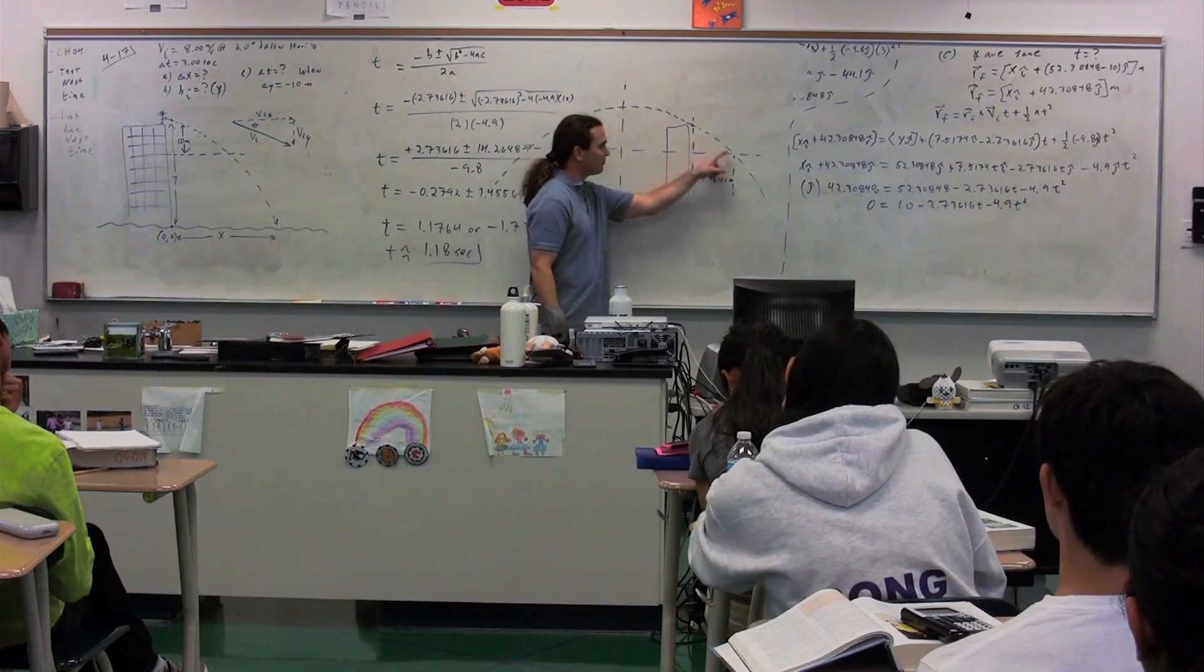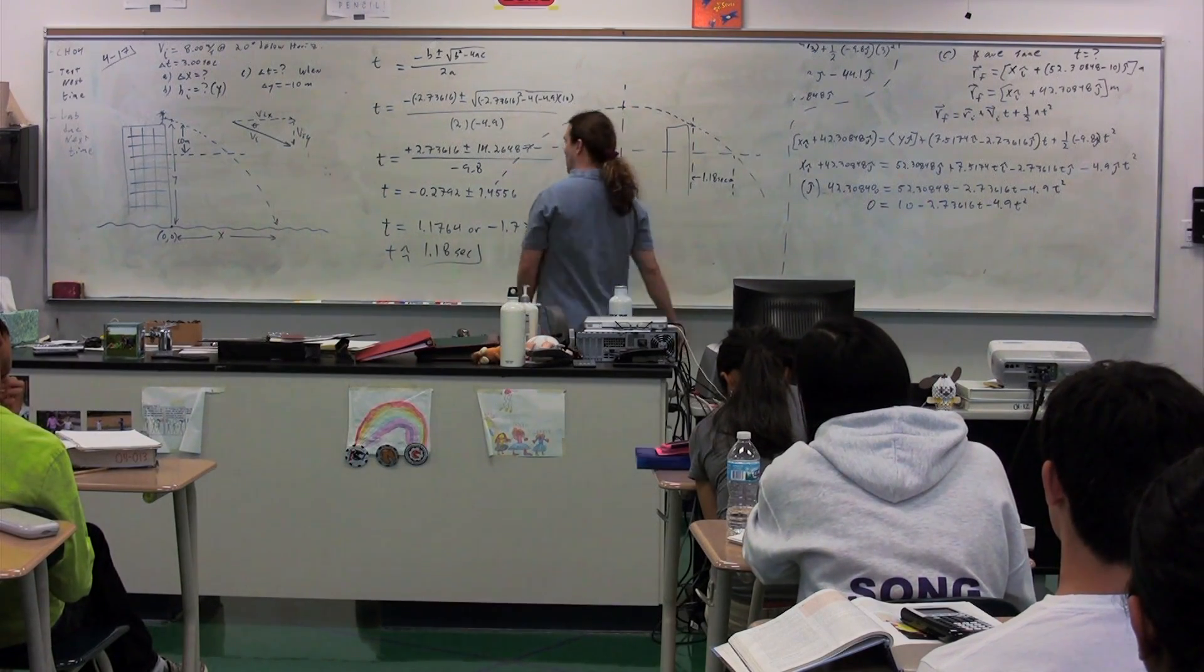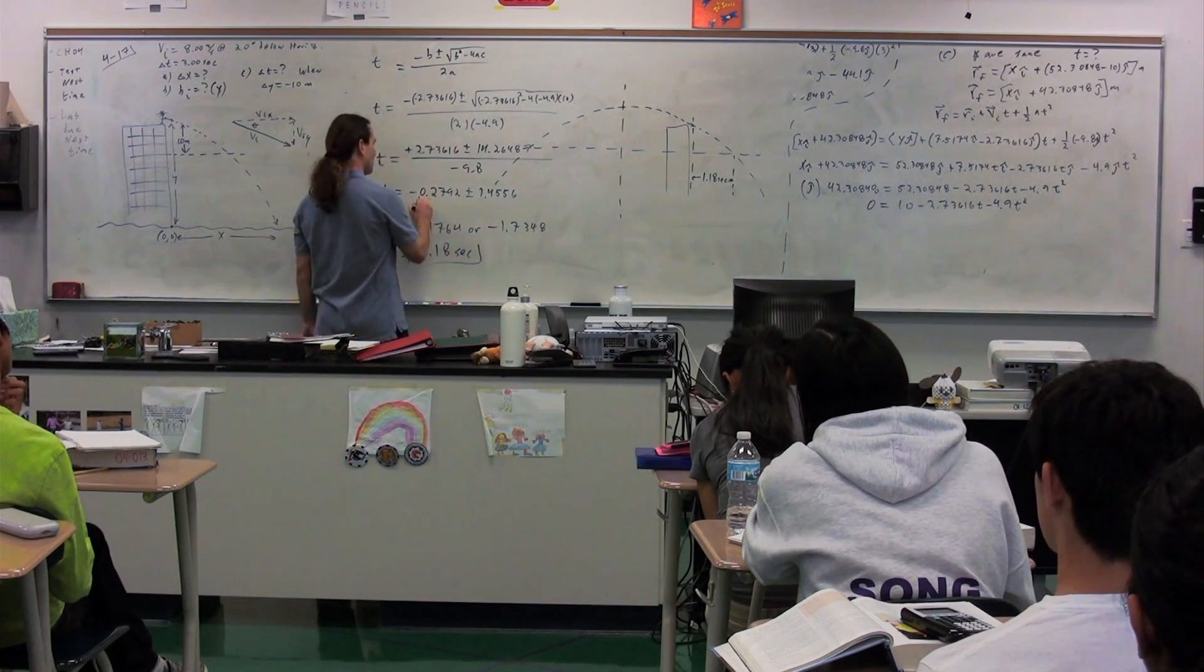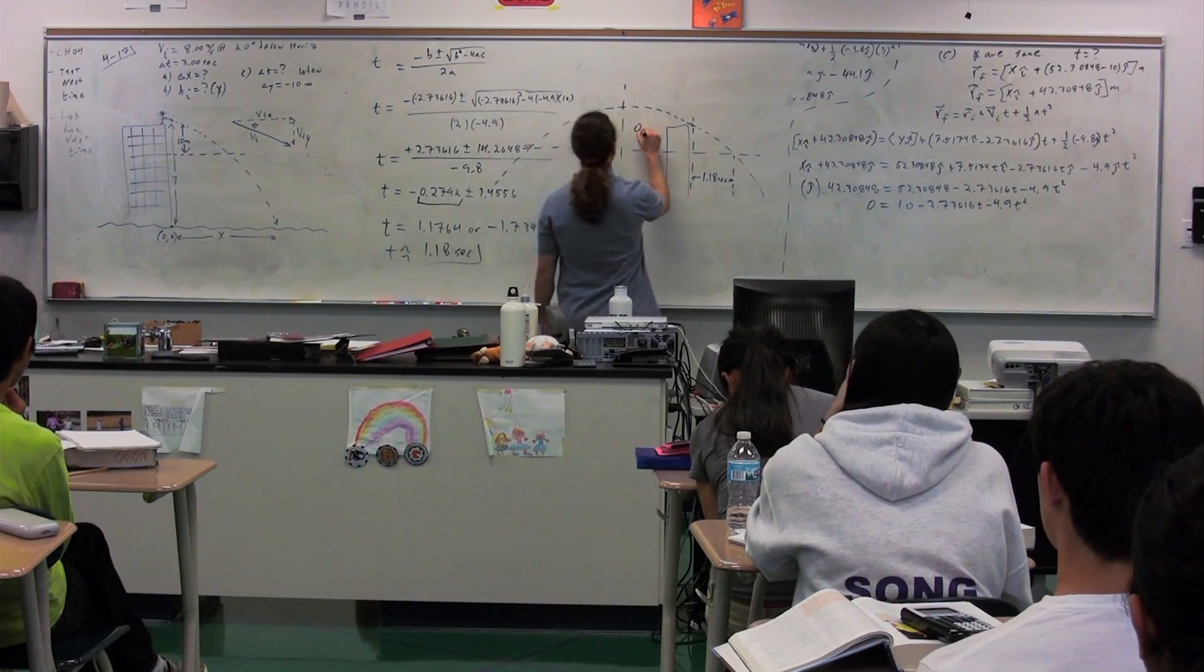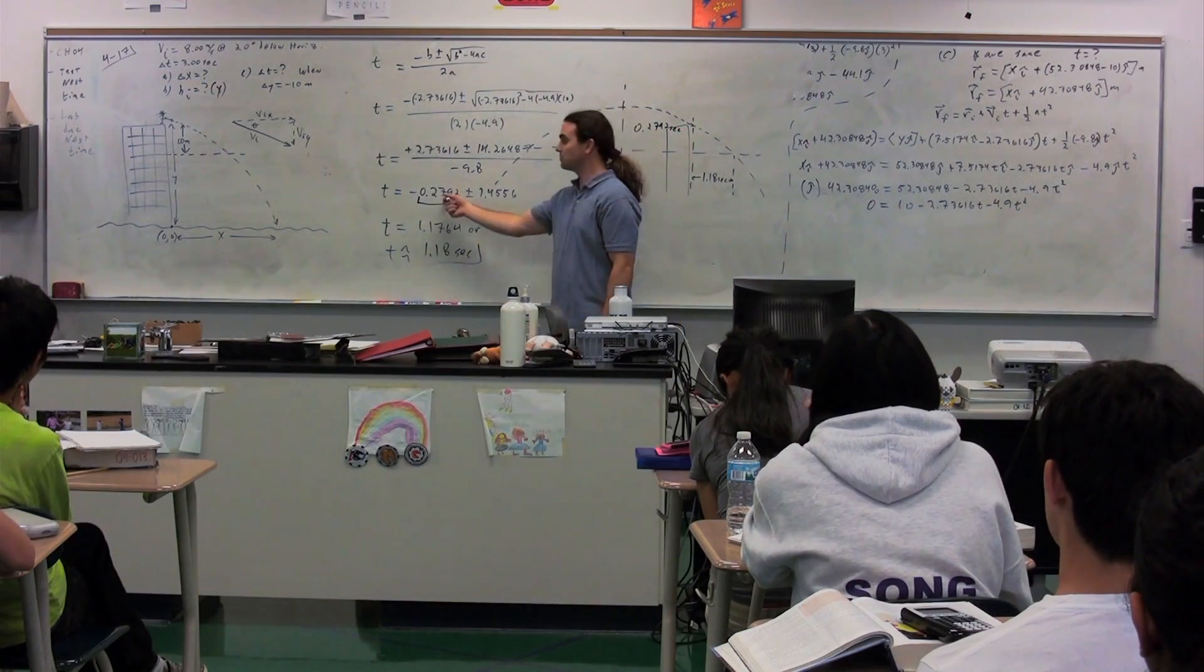This time from here to here. But it turns out that we can also see from this graph that if we were to go back in time, the parabola, if we were to have thrown the ball from over here and it went up and came down and went right past this location, it would be right here. And it would be 0.2792 seconds beforehand. That's what this means.